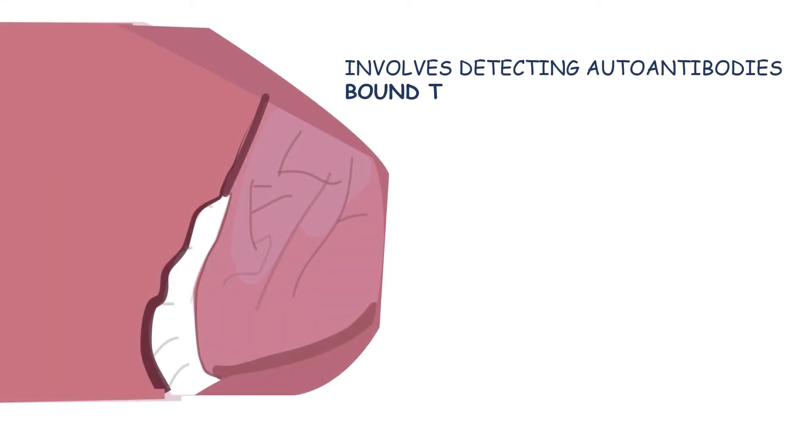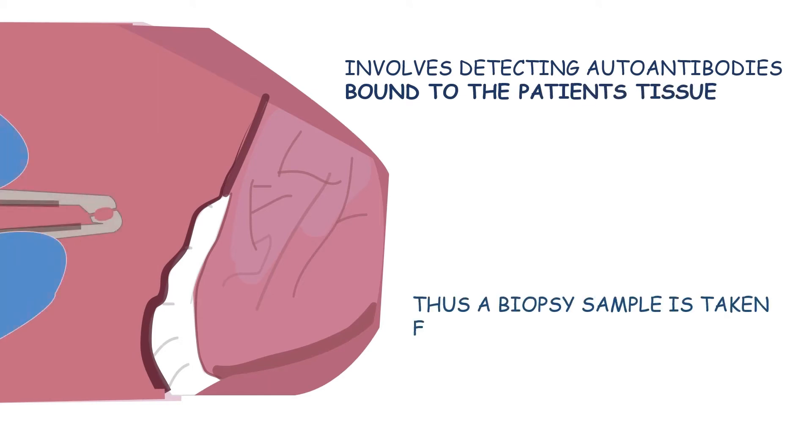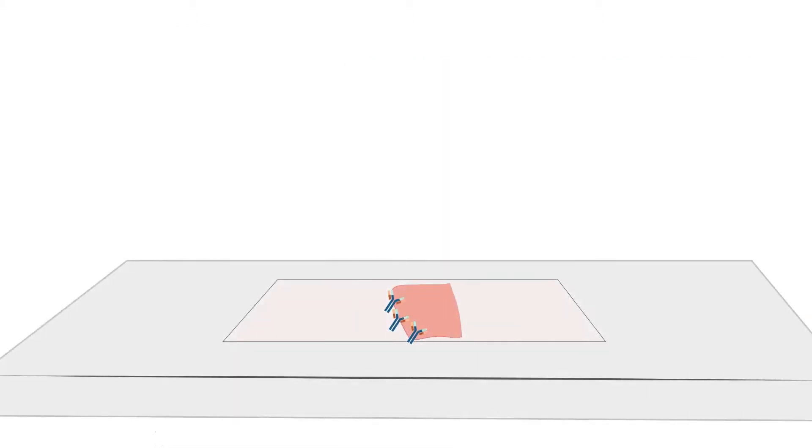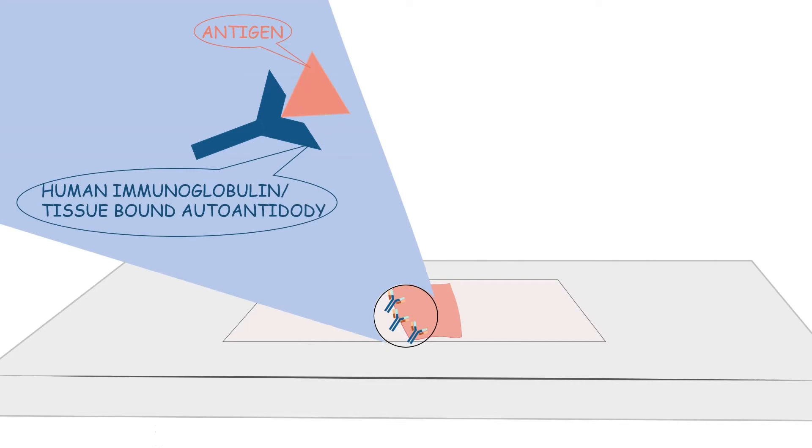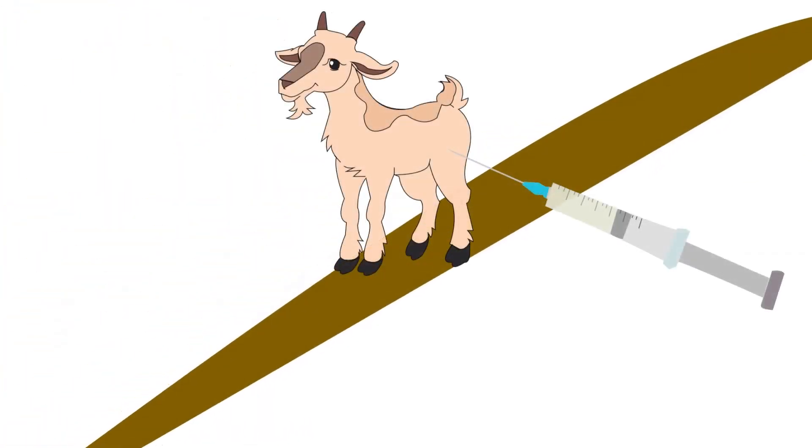Direct immunofluorescence involves detecting autoantibodies bound to the patient's tissue. Thus, a biopsy sample is taken from the affected individual. A closer look of the specimen clearly shows the autoantibody bound to a target antigen.